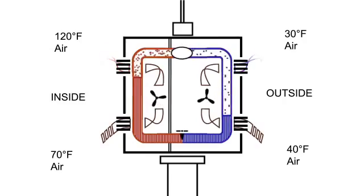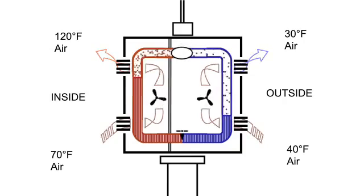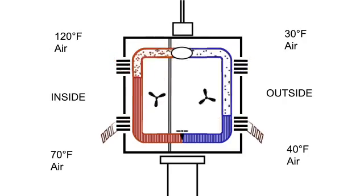In a heat pump, we simply reverse the flow in the winter when we want heat. By switching the direction of the coolant, the cold side, the evaporator, flips to the outside of the building, and the warm side, the condenser, moves to the inside.